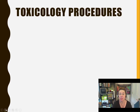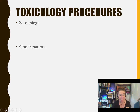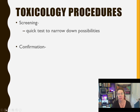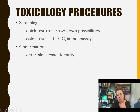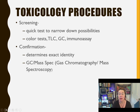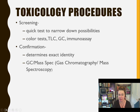Let's talk about some toxicology procedures — ways that things are actually tested for. We have two major groups of tests. The first is a screening test and the second is confirmation. Screening tests are generally a quick test to narrow down a realm of possibilities. This includes color tests, TLC (thin layer chromatography), gas chromatography (GC), and immunoassay. Confirmation tests determine the exact chemical identity of the drug, toxin, or poison. This is usually done through GC mass spec — gas chromatography mass spectroscopy — which is truly how you get a chemical fingerprint for any substance. It is the most accurate confirmation test, period.